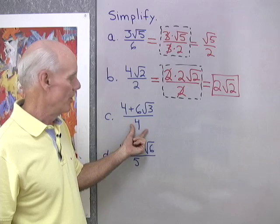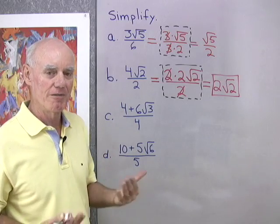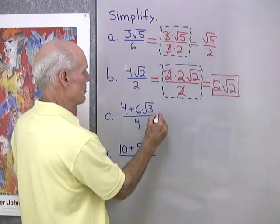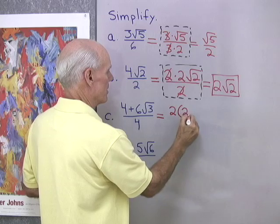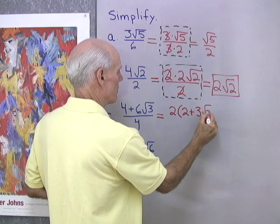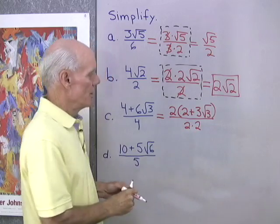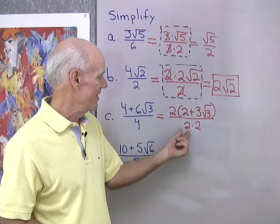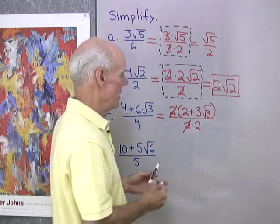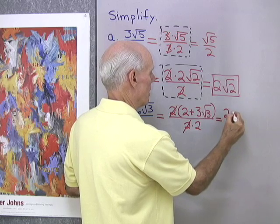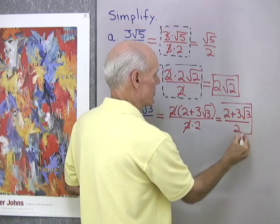Now here I have a sum in the numerator. The first thing I want to notice is I cannot divide this 4 into this 4 — that's not going to work. I can only divide out common factors. So I need to factor the numerator. It looks like there's a 2 common to each term. I'll factor that out, and what's left is 2 plus 3 square root 3, all divided by 4, which I'm going to write as 2 times 2. I'll divide out that common factor of 2, and I end up with 2 plus 3 square root 3 all divided by 2.